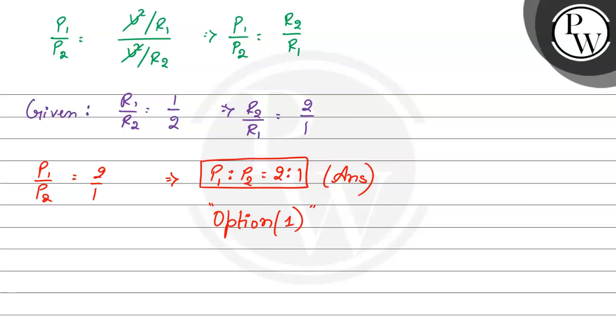So, the final answer to this problem is the ratio of the powers P1 is to P2 is 2 is to 1 and the correct option is option number 1. I hope the solution is clear to you. Thank you and best of luck.